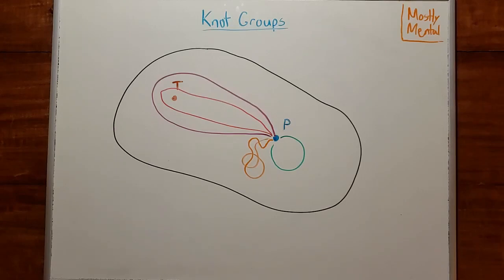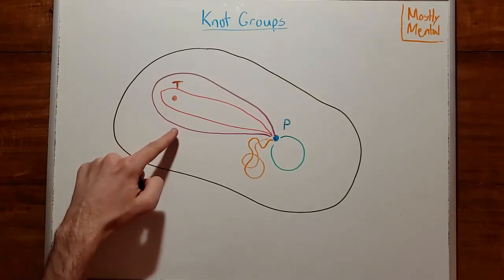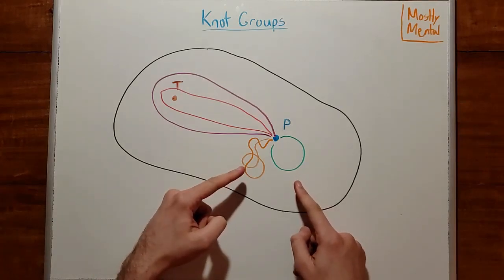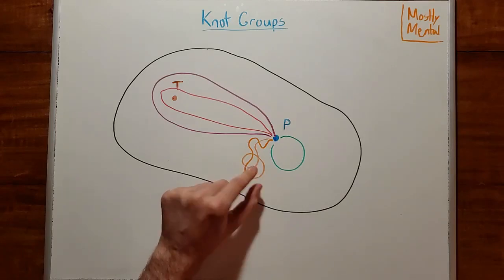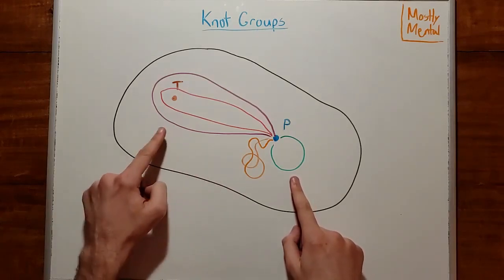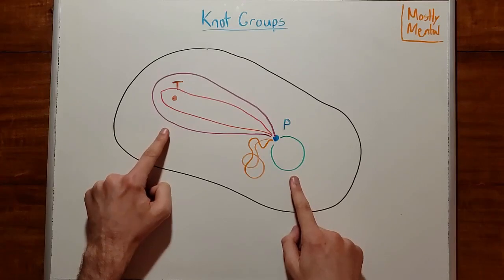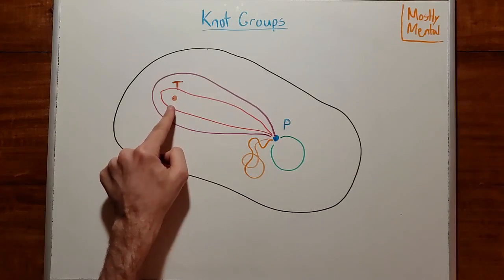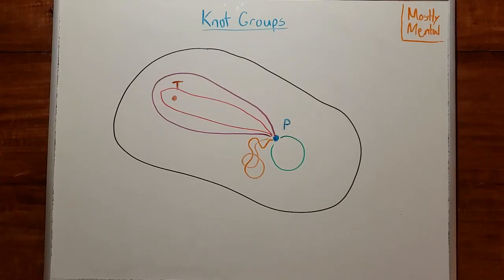In other words, we can continuously deform this path into this one. And we can actually do the same thing with these two paths. We can take this path here and uncross it and drag it over here to get this one. And again, that's a continuous deformation. So fundamentally, these are the same path too. But these are not the same path, since there's no way to stretch this over to this side without having to pass the path through the tree. And in general, we'll say that two paths are equivalent if we can continuously deform one into the other.